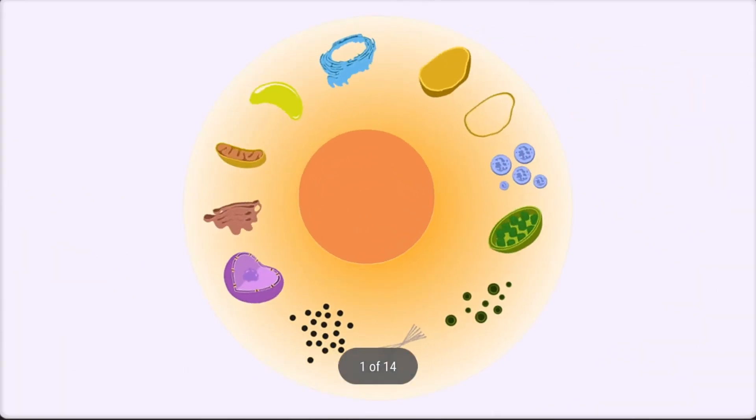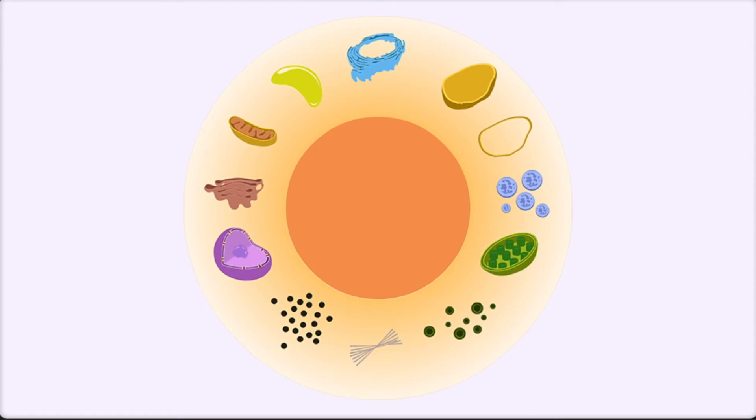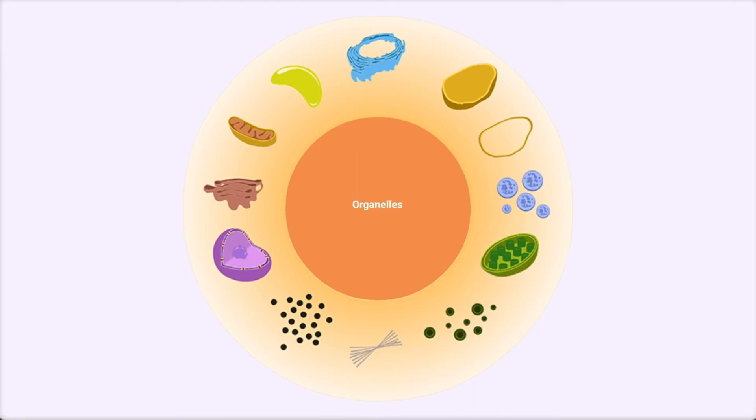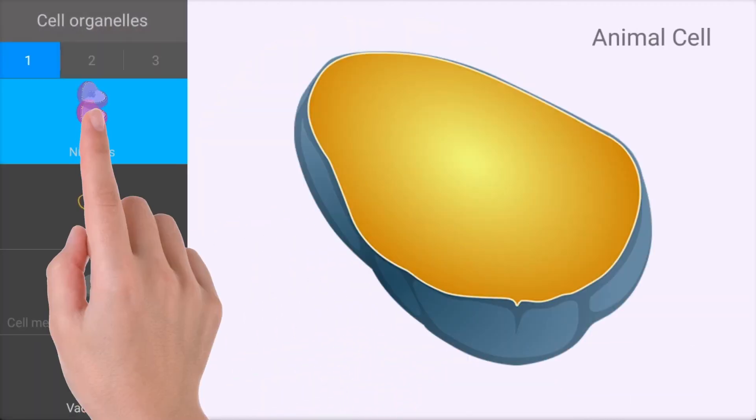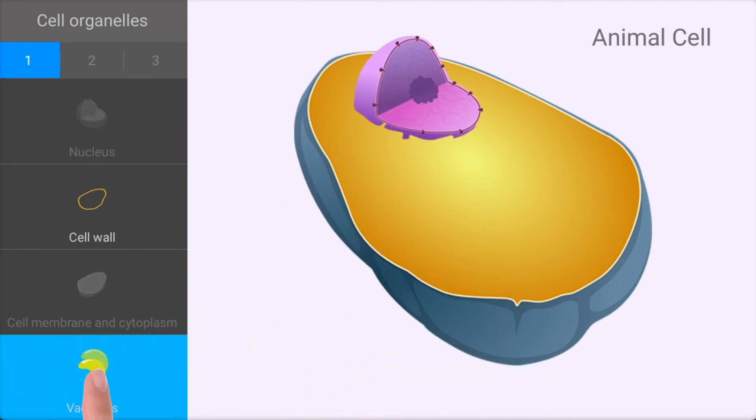Learn about cell structure. Cells consist of several components. These components are called organelles. Can you build an animal cell by dragging its organelles? Tap on each organelle to find out more about it.